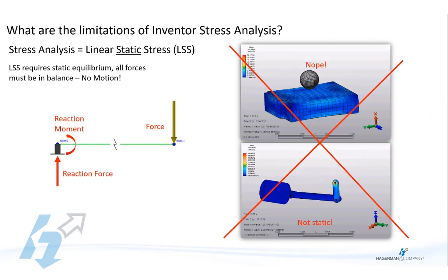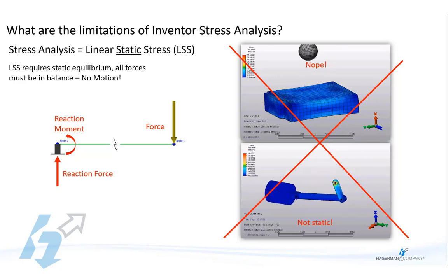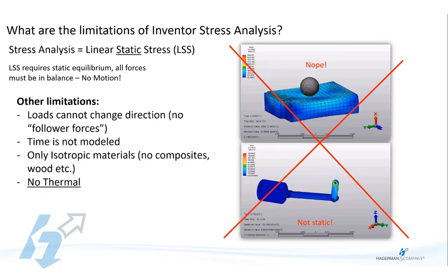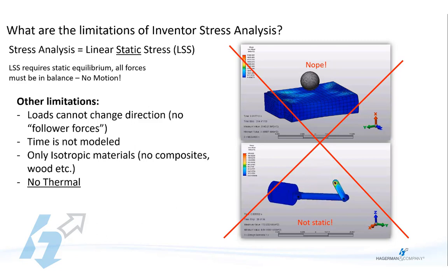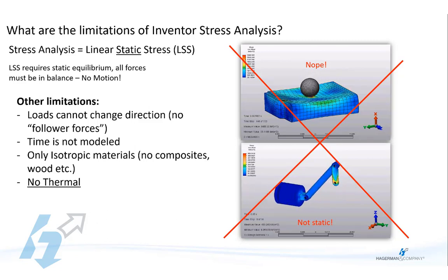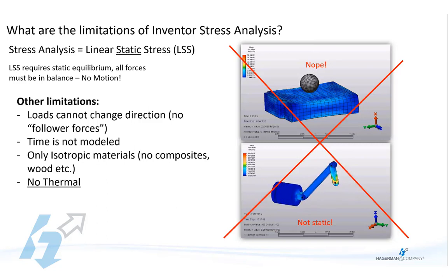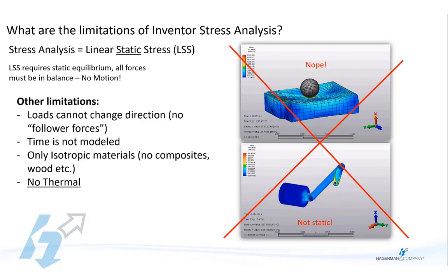The next word in that name is static. This basically means the problem is perfectly balanced — the loads applied to it are fully resisted by the constraints holding it in place; they are in equilibrium, meaning no motion. It also assumes your loading is applied slowly, so there is no dynamic response to shock. Some other commonly reached limitations: loading cannot change direction, so think of pressure against a severely deforming vessel where the force needs to stay normal to the inside surfaces. Time is not modeled — LSS shows you the result as though an infinite amount of time has passed and a balance has been found. Materials where strength is dependent on direction of loading, like composites, cannot be modeled — so no carbon fiber, fiberglass, or wood. LSS is really best suited to ductile metals and certain stiff plastics. And one of the most common reasons people graduate to a more advanced tool is thermal — if you want to run heat transfer or thermal stress problems, Inventor can't help you.